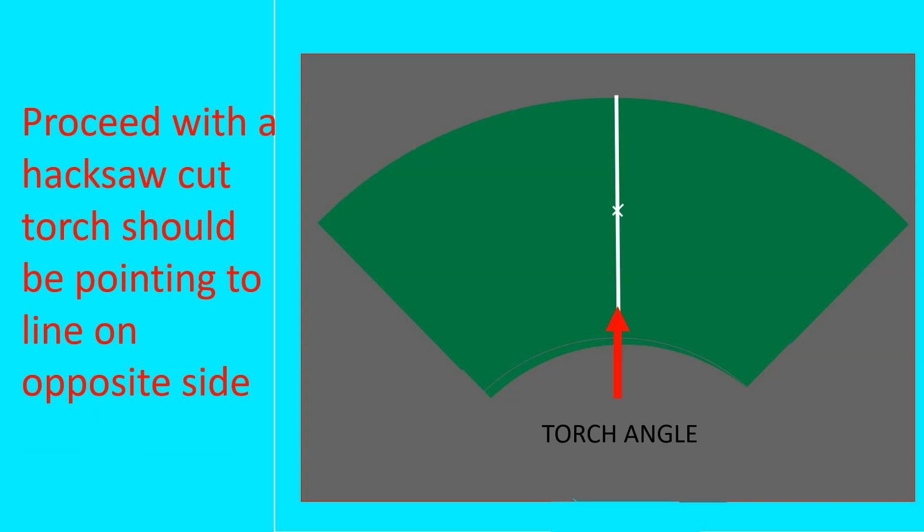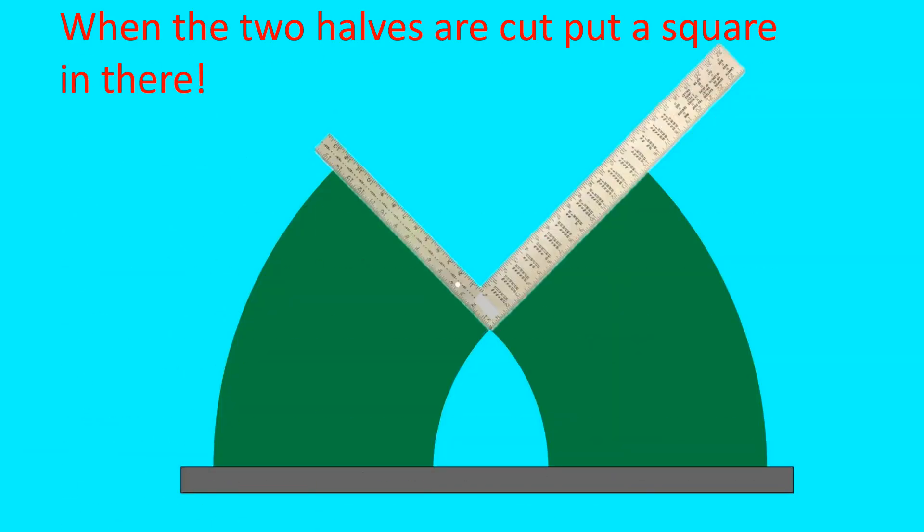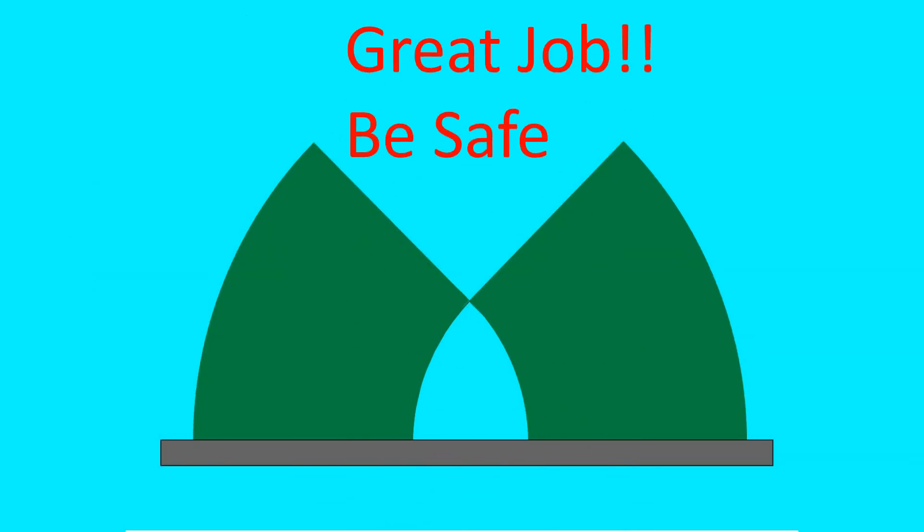Proceed with the hacksaw cut. The torch should be pointing to the line on the opposite side. When the two halves are cut, put a square in there and they should look like this. Great job and be safe and we'll talk to you soon. There's more of this to come.